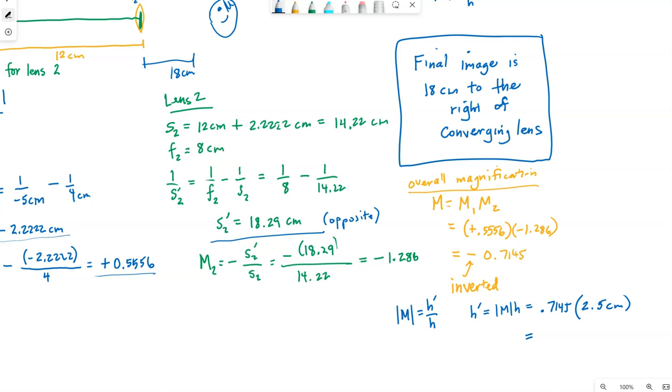So rounding this to two significant figures the image is 1.8 centimeters tall. So final image is 18 centimeters to the right of the converging lens. It is inverted. That's the orientation of it and then its size is 1.8 centimeters tall.